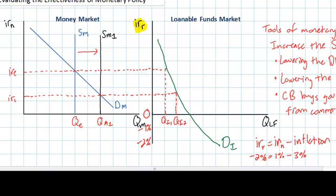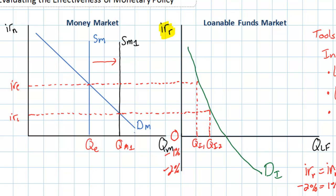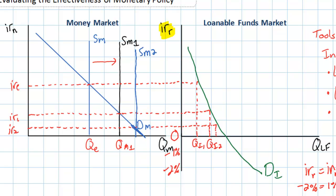So why doesn't the central bank just keep increasing the money supply? Let's show the effect of a further increase to SM2. The nominal interest rate is now very close to 0 — down at around 0.5%, which we'll call IR2. Even at interest rates of 0.5%, there is relatively little change in the quantity of private sector investment. Businesses are simply unresponsive to further decreases in the interest rate. If we increase the money supply even further to SM3, we have now reached a 0% nominal interest rate. Increasing the money supply any further cannot push nominal interest rates below 0%.